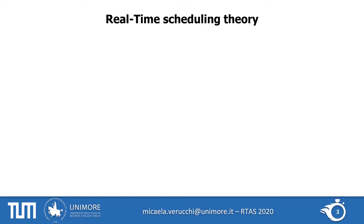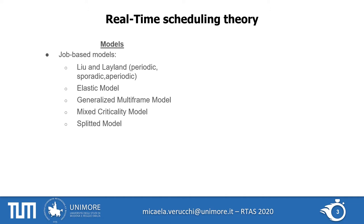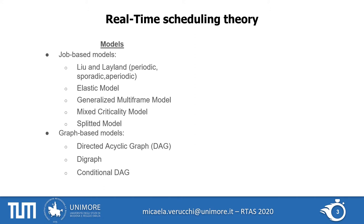When dealing with the theory of real-time scheduling, there are two very important aspects: the model you choose to represent your tasks, and the scheduling choices you make. In the literature, several models can be found, starting from the Liu and Layland model, going through the Elastic model, Generalized, Multi-Frame, Mixed-Criticality model, or Splitted model. All of them represent tasks as sequential jobs. With the increasing complexity of applications, more expressive models were also proposed, such as graph-based ones.